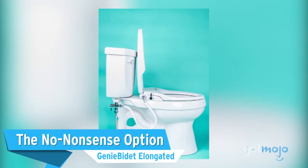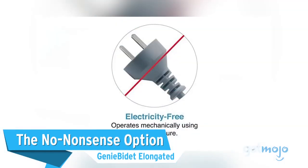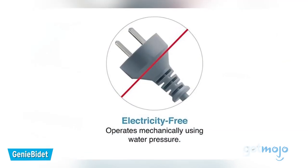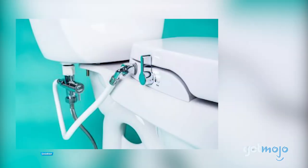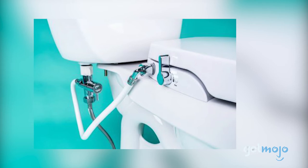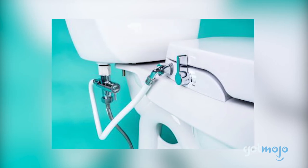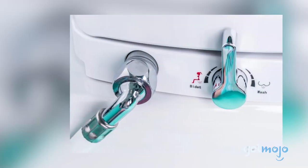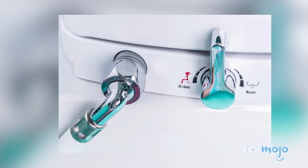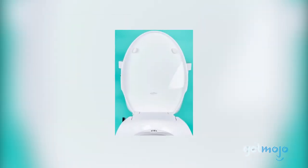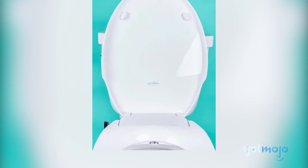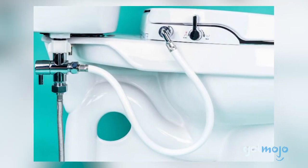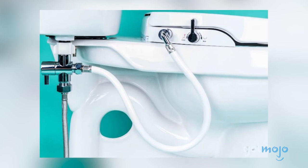The no-nonsense option. The Genie Bidet Elongated. If the idea of an electric bidet puts you off, purely due to the impracticality of trying to find a power outlet, then maybe this $140 non-electric Genie Bidet model will interest you. Although it lacks some of the more premium features of some electric models, this Genie Bidet model still features dual nozzles, adjustable pressure, and temperature controls. And it's super easy to set up. Just screw on the seat, connect a hose, and you're good to go.